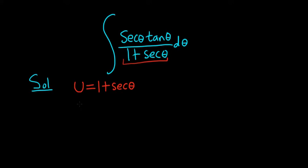And now we'll take the derivative. So du, well the derivative of secant is secant tangent. So this is secant theta tangent theta d theta.